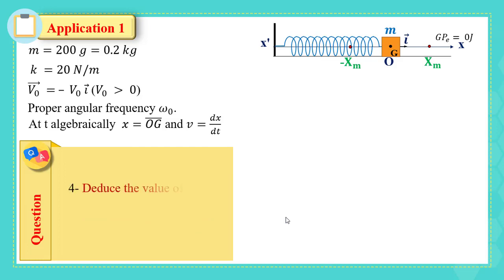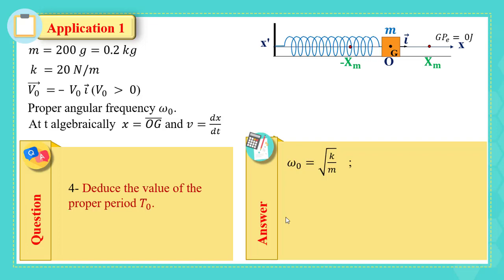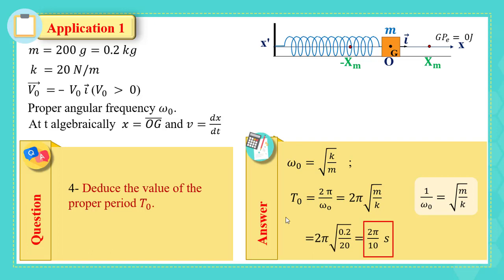Part four: deduce the value of the proper period T₀. We know ω₀ = √(k/m). Since T₀ = 2π/ω₀, and 1/ω₀ = √(m/k), we substitute: T₀ = 2π·√(m/k). Replacing m and k by their values gives T₀ = 2π/10 seconds.